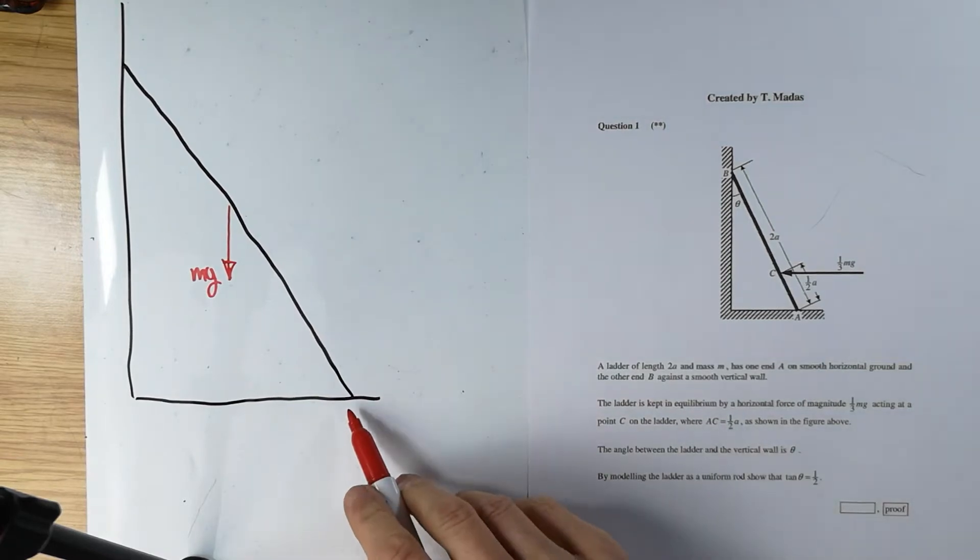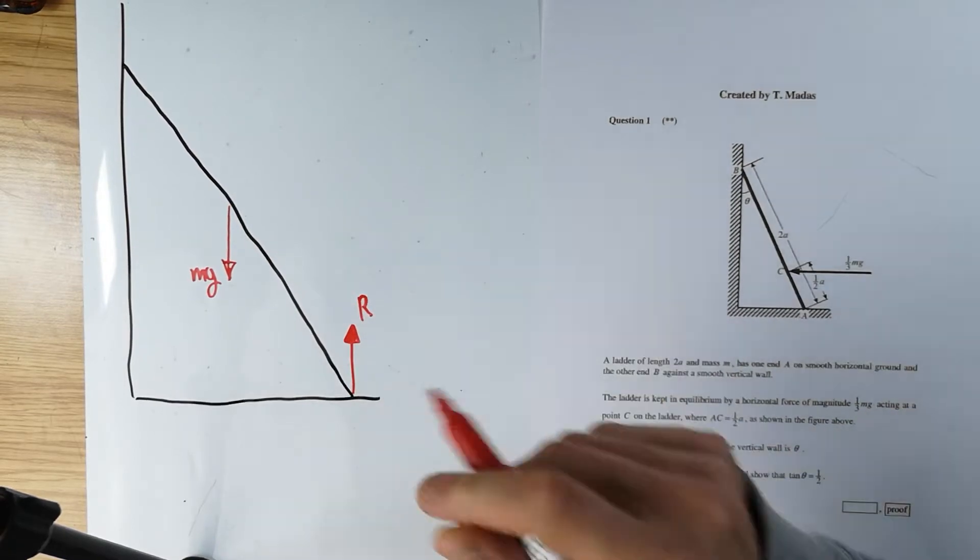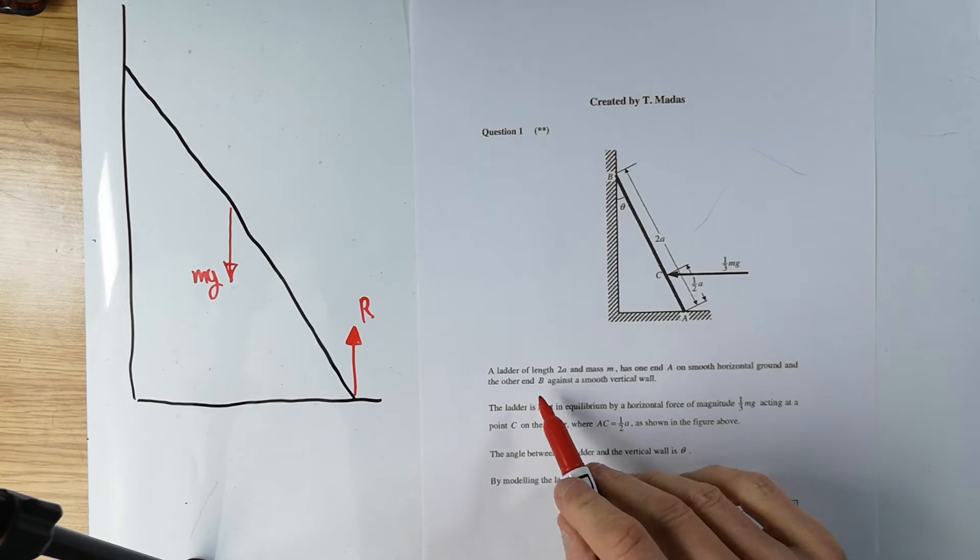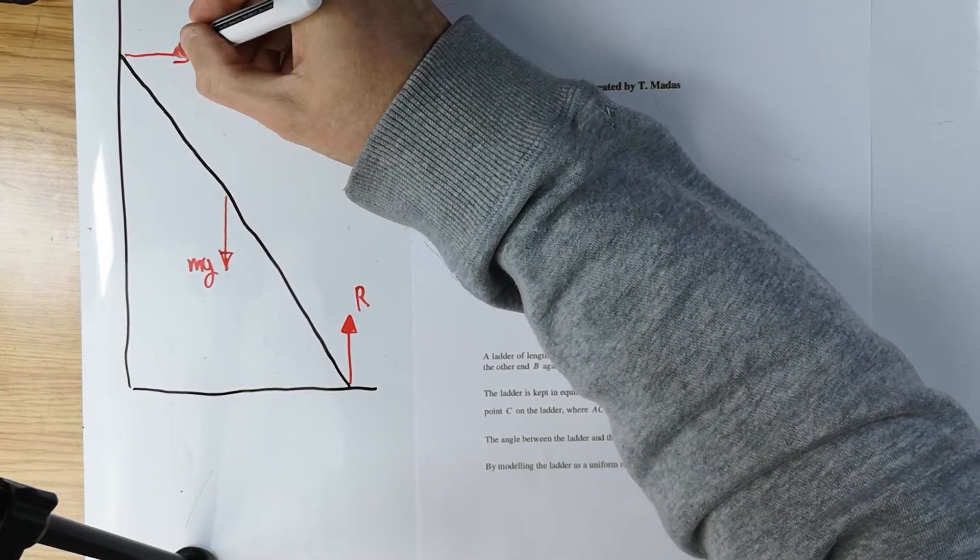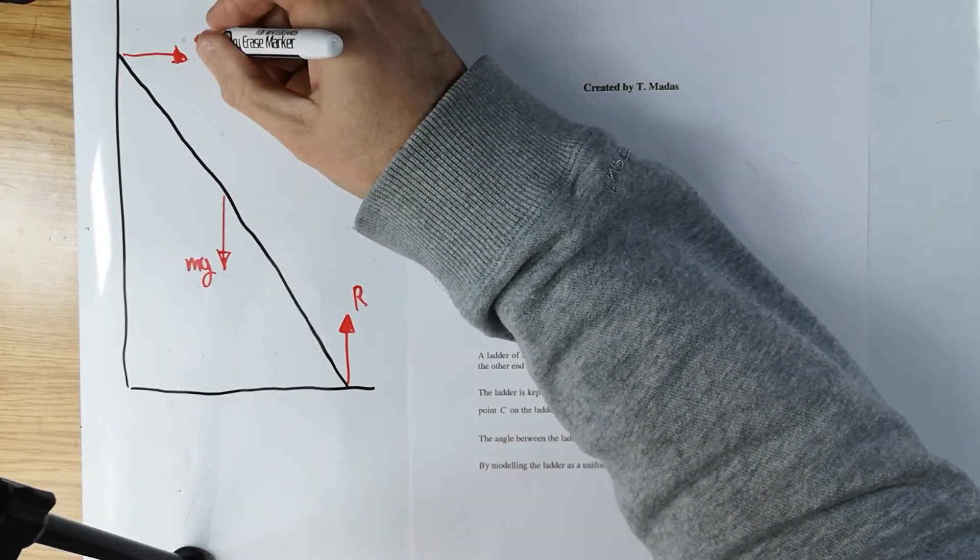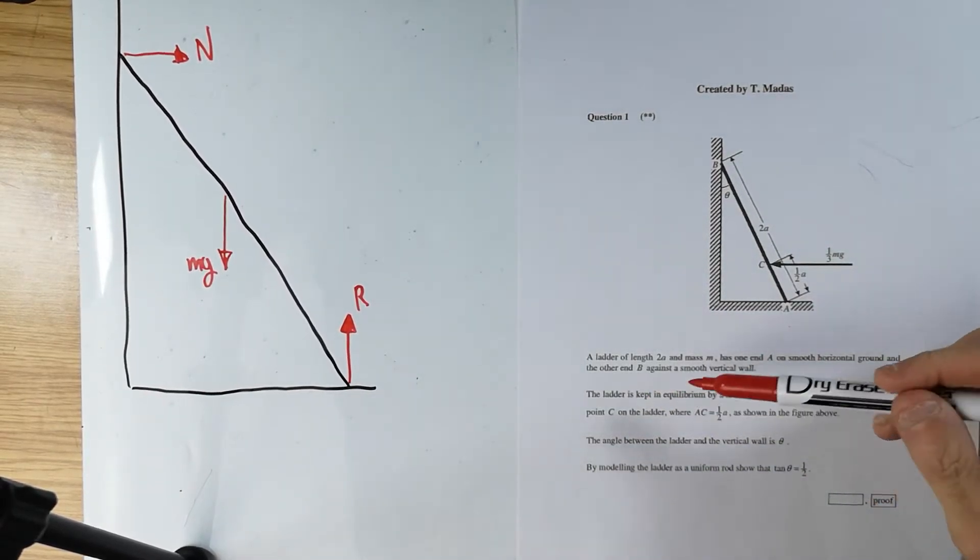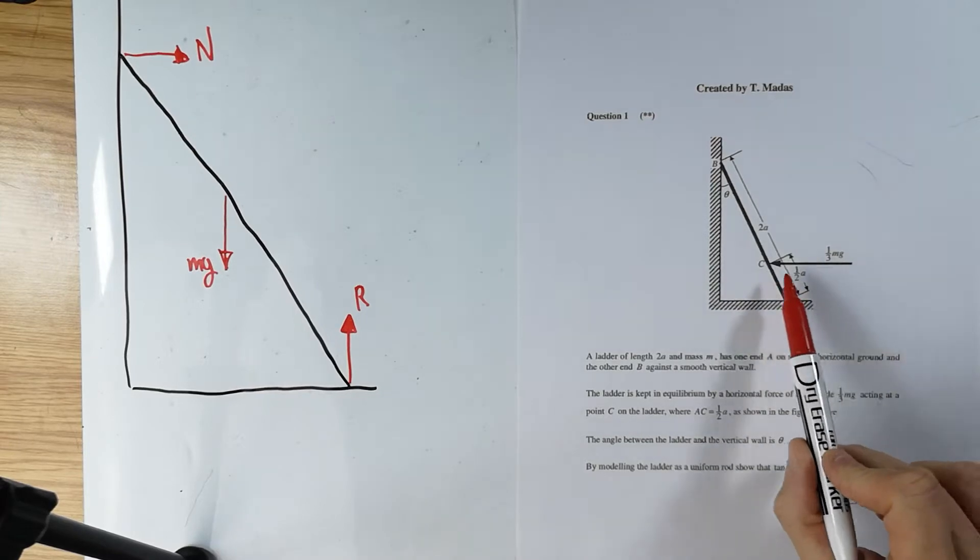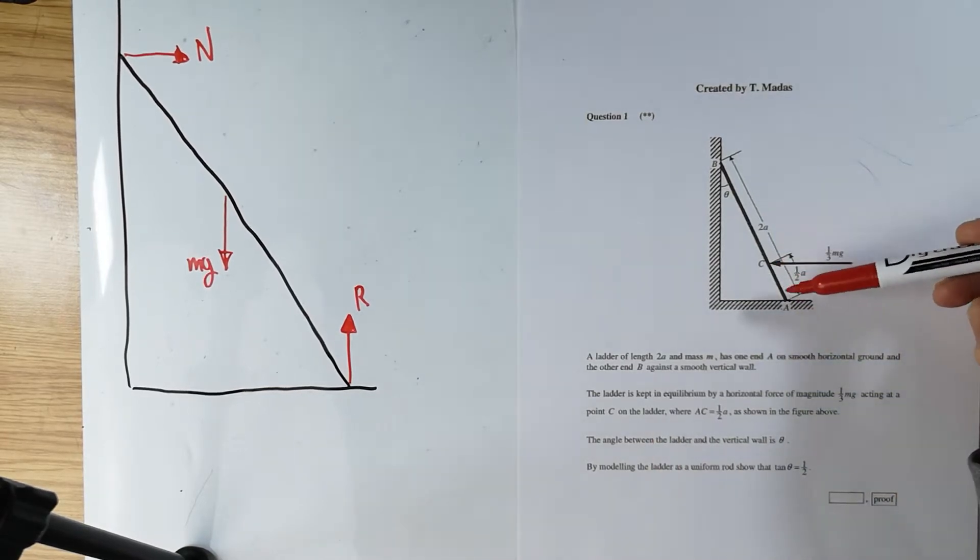It has one end A on a smooth horizontal ground. Smooth, no friction. But there will still be a normal reaction from the ground at right angles to the ground R. And the other end B against a smooth vertical wall. No friction again. But there's going to be again a normal reaction at right angles to the surface of the wall in this case. I don't want to put R1 and R2. I don't like it. So I'm going to call it capital N for normal reaction.